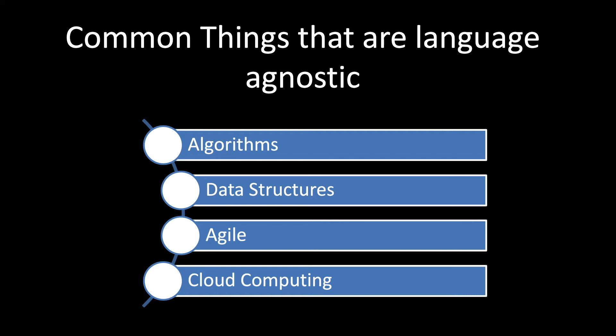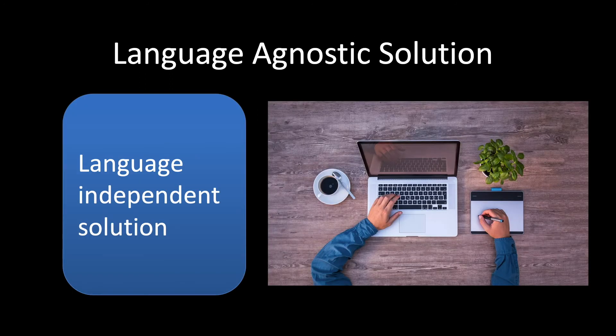Data structures like stacks, queues, priority queues, and trees are language agnostic — they can exist in any language. Another thing that is language agnostic is Agile: your scrum meetings and agile practices are language agnostic. In recent times, cloud computing offerings from AWS, Azure, or Google Cloud are also language agnostic — they support multiple platforms and languages, making it easier to solve problems in any language.